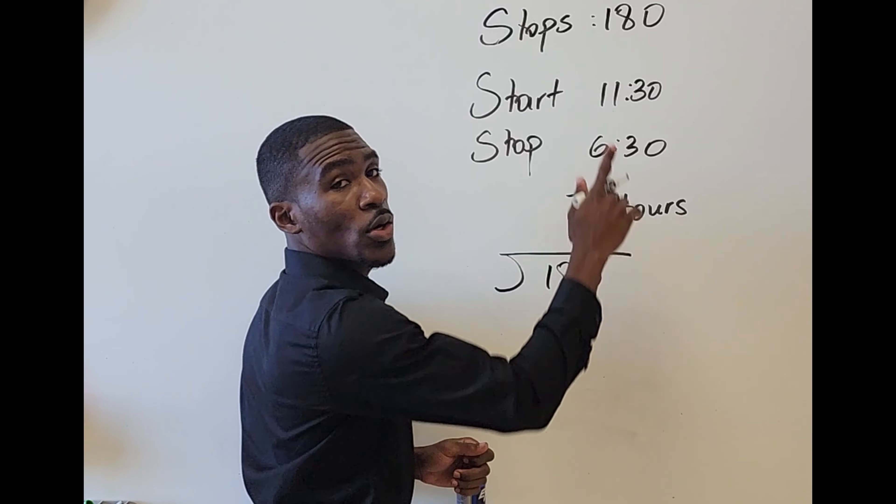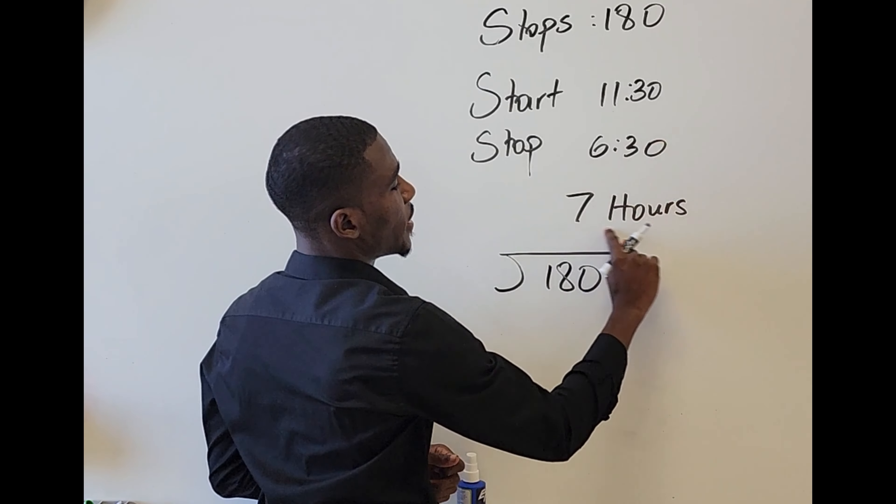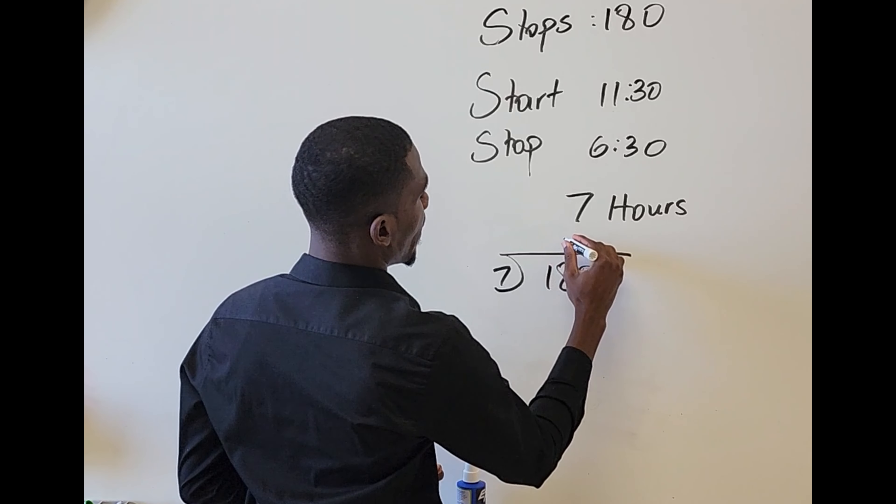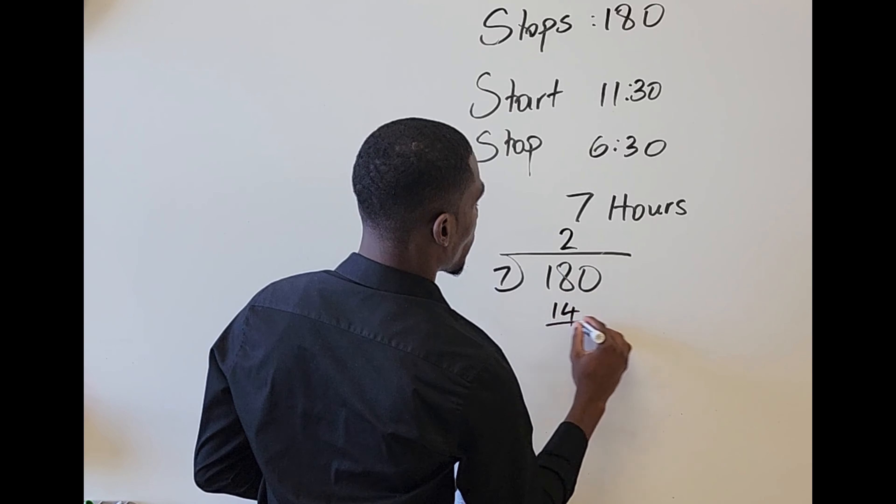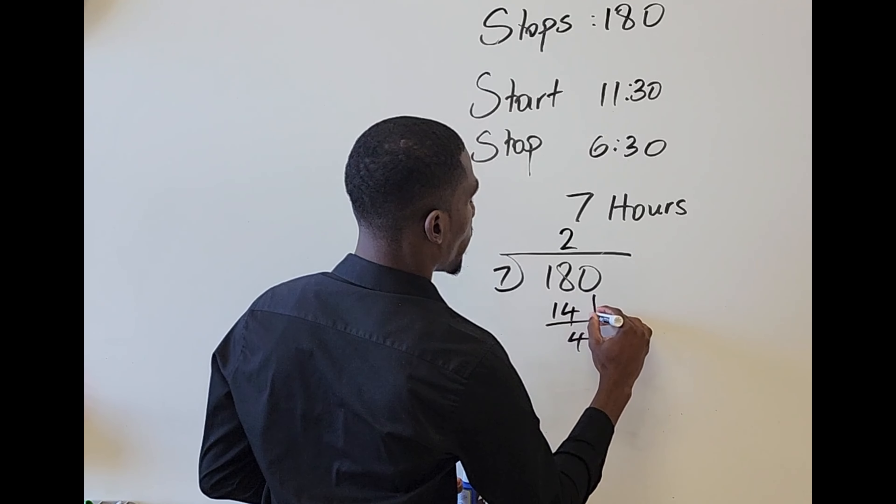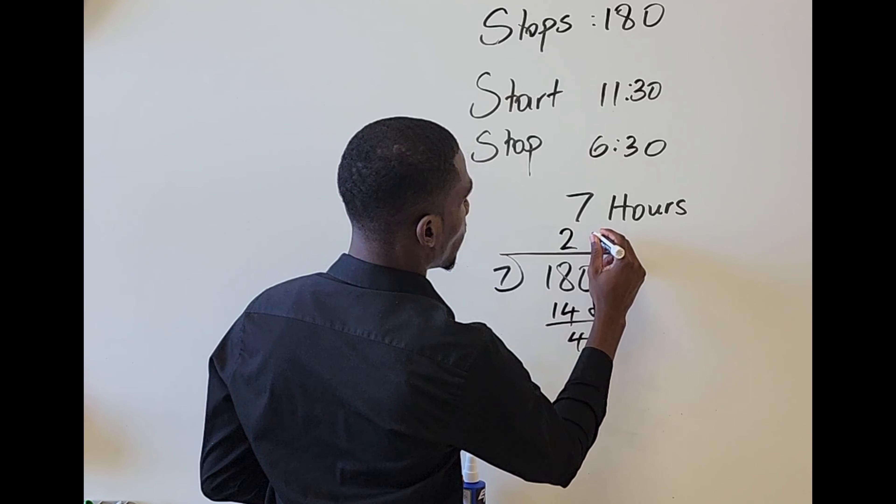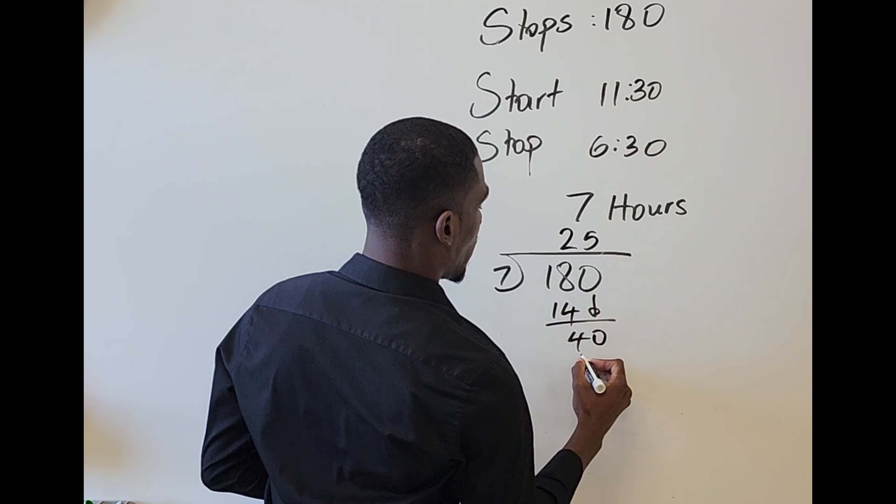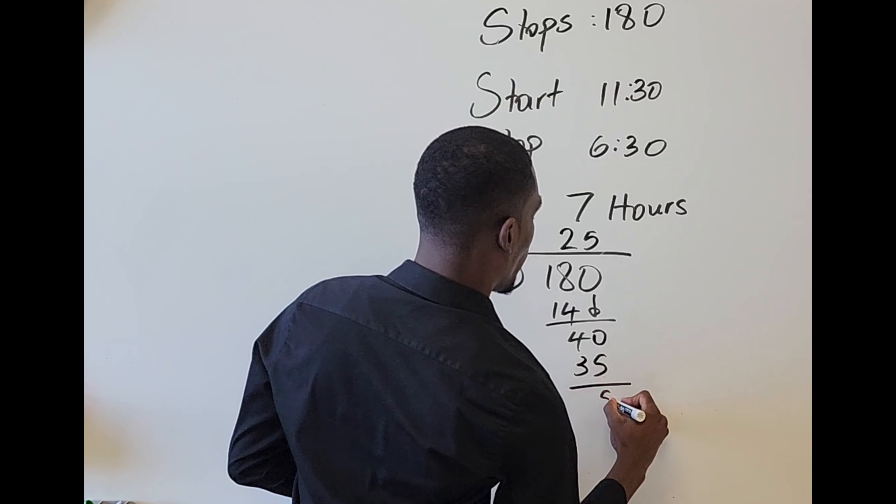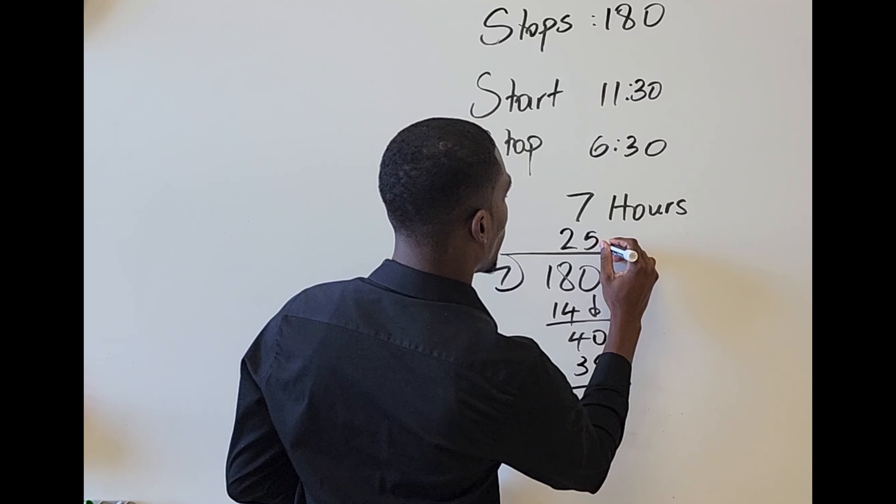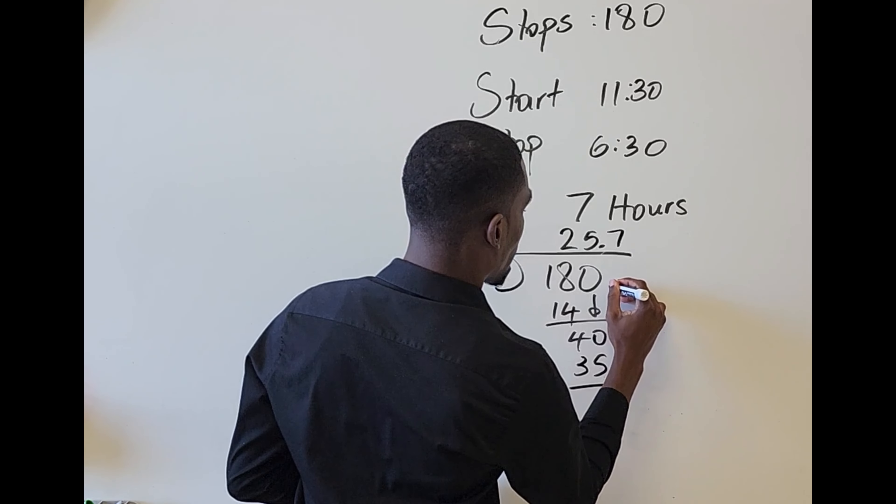So I would divide 180 stops by 7 hours, and that's going to give me 7 into 18 goes 2 times. 7 times 2 is 14. 18 minus 14 gives me 4. I bring down the 0. 7 into 40 goes 5 times. 7 times 5 is 35. And then 40 minus 35 is 5. 7 into 50 goes 0.7. All right.